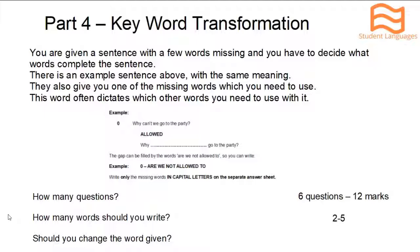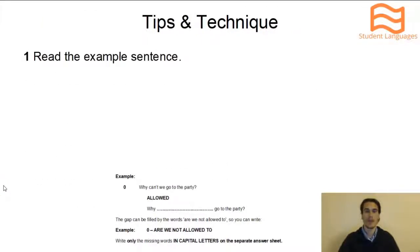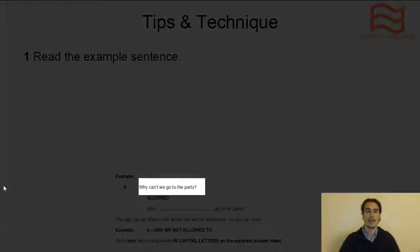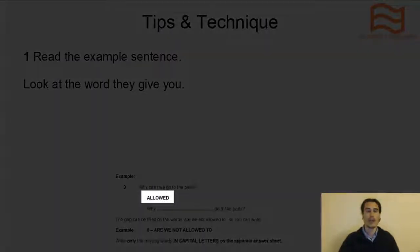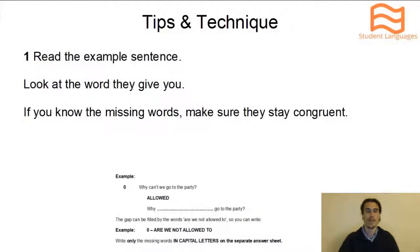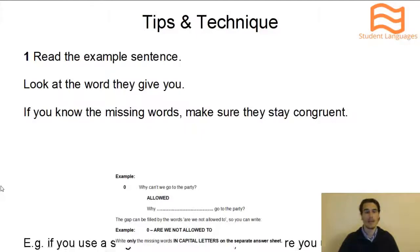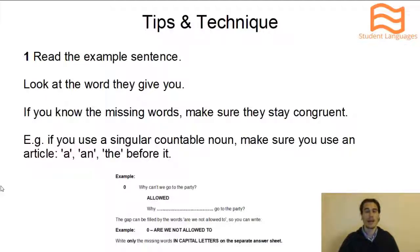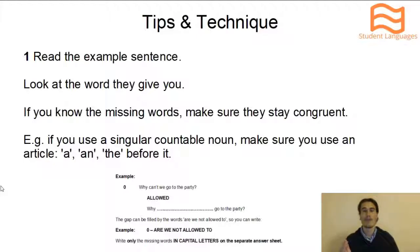How many words should you write in the gap? A minimum of 2 words and a maximum of 5 words. And should you change the word they give you? No, you shouldn't. So it's time for my first tip: read the example sentence they give you, then look at the word they give you, then look at your sentence. If you know the missing words, make sure they stay congruent. For example, if you use a singular countable noun, make sure you use an article — a, an, or the — before it. Or if you use a subject like 'I', make sure the verb is the correct form for that subject.